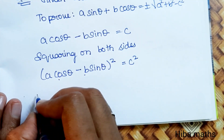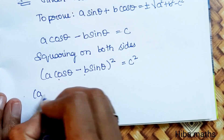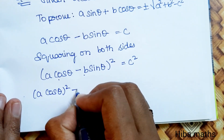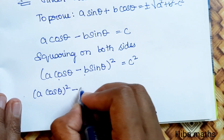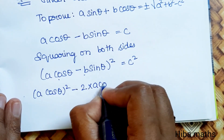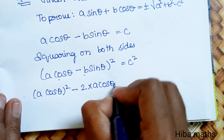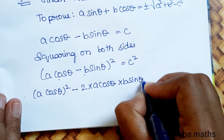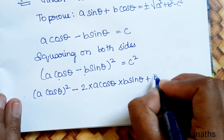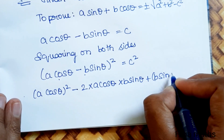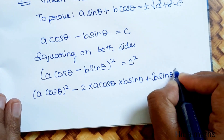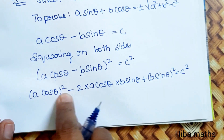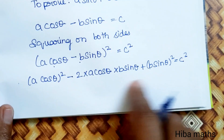Expanding: a squared cos squared theta minus 2ab sin theta cos theta plus b squared sin squared theta is equal to c squared.